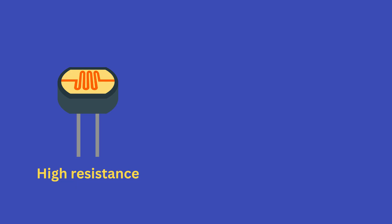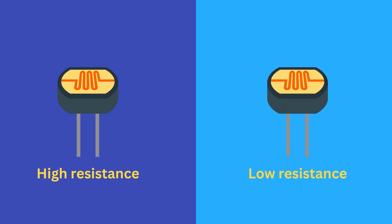An LDR or light-dependent resistor is a resistor whose resistance changes based on the amount of light it is exposed to. Typically these resistors have high resistance in the dark and low resistance in the bright light. This unique property makes them incredibly useful for sensing light levels in various applications.